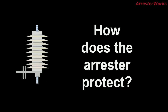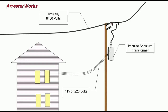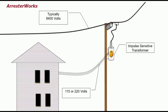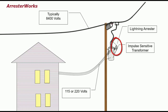So how does a Lightning Arrester protect the power system? Let's take a look at an example where the transformer is not protected by an arrester. If lightning were to strike the line, the current will flow down the line into the transformer. This will most likely result in damage to the transformer and the lights will go out. However, if the transformer is protected by an arrester and the line is hit by lightning, the arrester will turn on and divert the surge to ground. The arrester protects the transformer from damage and of course, the lights stay on.